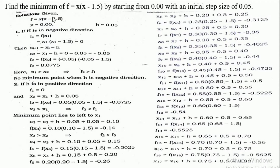The solution is given: f(x) = x(x − 1.5), x1 = 0.00, and h = 0.05. First, if h is in the negative direction, f1 = f(x1). With x1 = 0.00, we get f1 = 0.00 × (0.00 − 1.5) = 0. Then x(i+1) = xi − h.